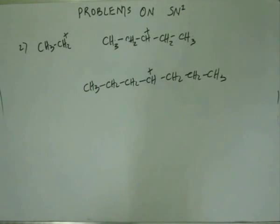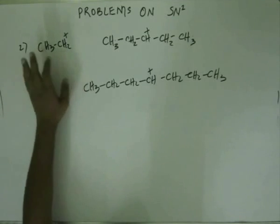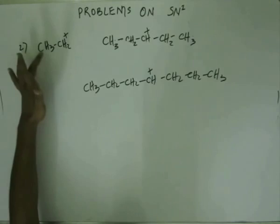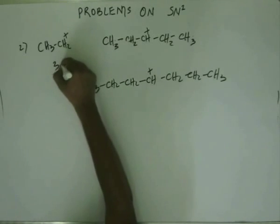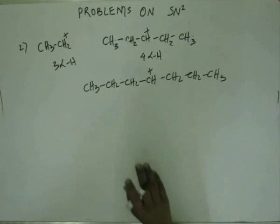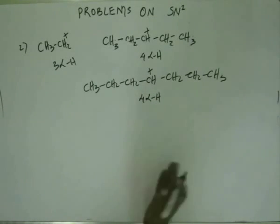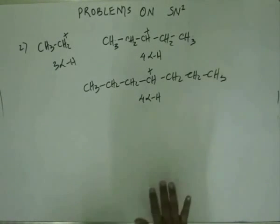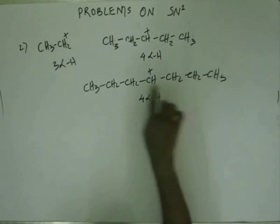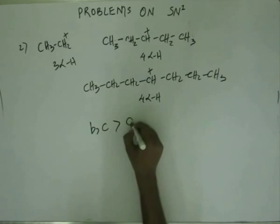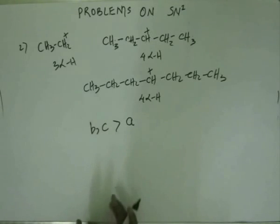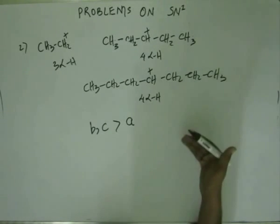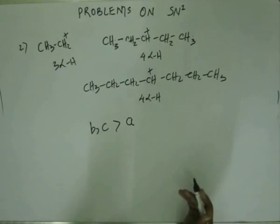Alpha hydrogens are the hydrogens on the carbon adjacent to the carbon bearing the plus charge. Here in substrate A, we have three alpha hydrogens. In substrate B, we have four alpha hydrogens — two at each alpha position on both sides. And in substrate C, again, we have four alpha hydrogens, two on each side. So, going by hyperconjugation, B and C are more stable than A. That means B and C will have a greater rate of reaction than A, owing to the greater extent of hyperconjugation. However, to judge between B and C, the extent of hyperconjugation is the same in both, so based only on hyperconjugation we cannot decide their relative rate.